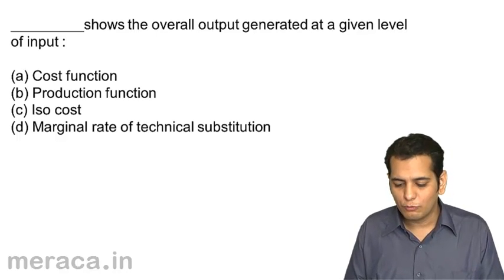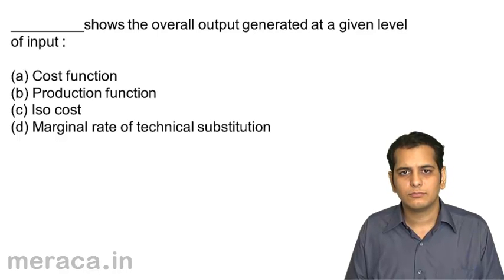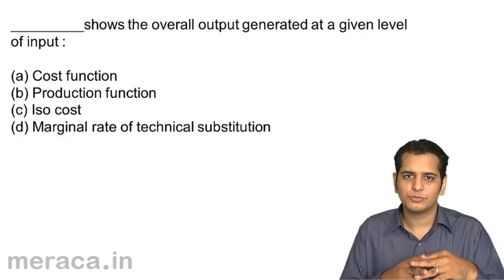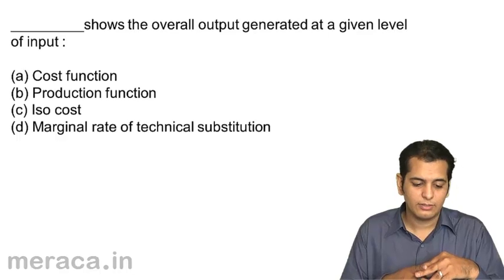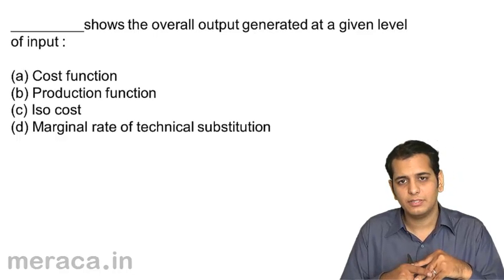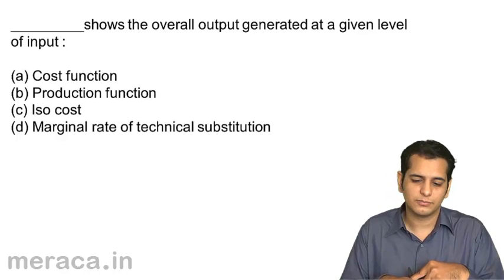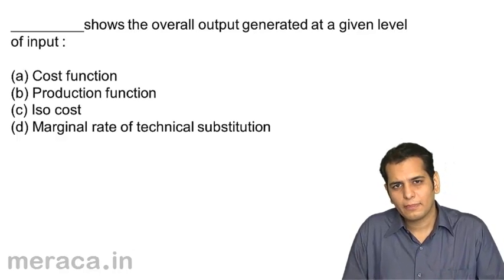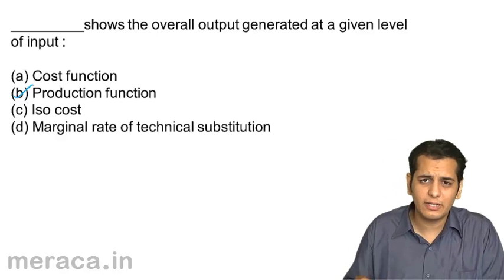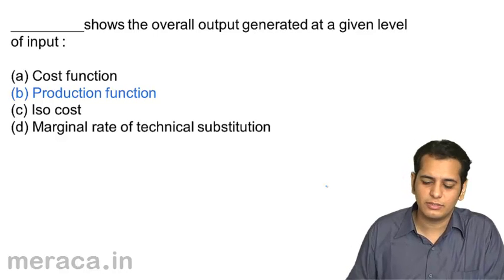Dash shows the overall output generated at a given level of input. What tells you the relation between the outputs and the inputs? Is it a) cost function, b) production function, c) iso cost, or d) marginal rate of technical substitution? Yes, it's production function. Production function tells us the relation between the inputs and the outputs.